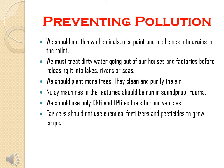Preventing Pollution: We should not throw chemicals, oils, paints and medicines into drains or the toilet. We must treat dirty water going out of our houses and factories before releasing it into lakes, rivers or seas. We should plant more trees, as they clean and purify the air. Noisy machines in factories should be run in soundproof rooms. We should use only CNG and LPG as fuels for our vehicles. Farmers should not use chemical fertilizers and pesticides to grow crops.